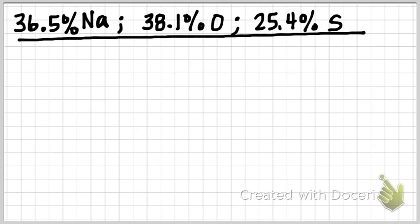Hello again, it's me. I'm going to walk you through how to do an empirical formula. In this example, you've got three elements, and you're given, in this compound, it's 36.5% sodium, 38.1% oxygen, and 25.4% sulfur.